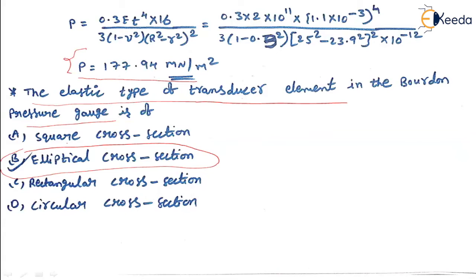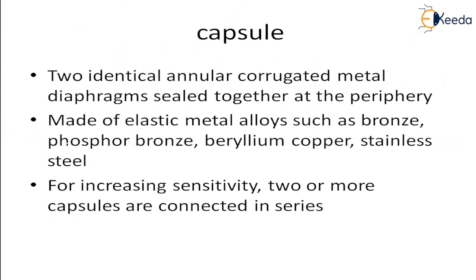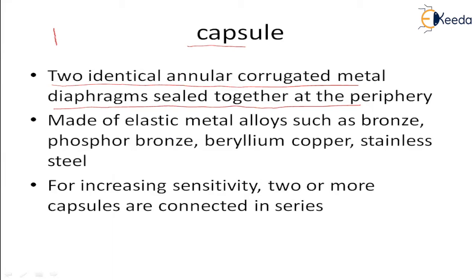Now we are going for the next concept — the capsule. Capsule means: it is made up of two identical angular corrugated metal diaphragms sealed together at its periphery. The capsule will look like this — I am going to use two diaphragms connected together, and I am going to apply the pressure here and the displacement delta is going to take place here.